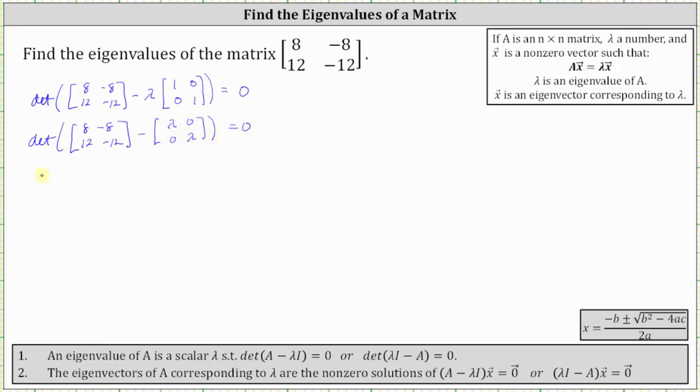Now we subtract the two matrices, which gives us the determinant of the two by two matrix where the first entry is 8 - λ. The second entry in row one is -8 - 0, or -8. In the second row, we have 12 - 0 and -12 - λ.